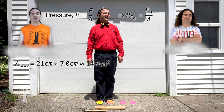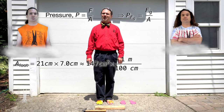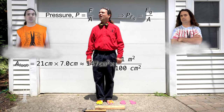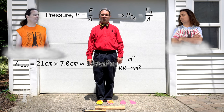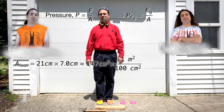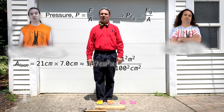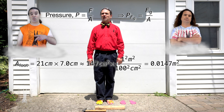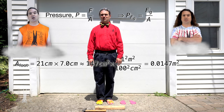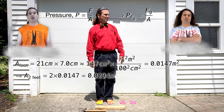Multiply 147 square centimeters by 1 meter over 100 centimeters. However, we need square meters, so square the conversion factor — that makes it 1 square meter over 100 squared centimeters squared. We actually multiply by 1 squared meters squared over 100 squared centimeters squared, or 0.0147 square meters. But I have 2 feet. Right, so the contact area of your 2 feet is 2 times 0.0147, or 0.0294 square meters.